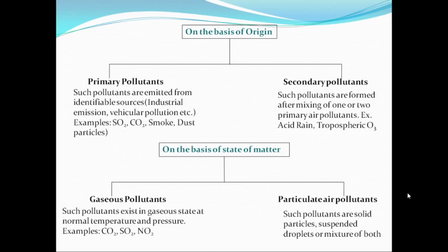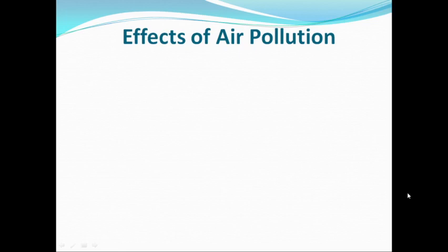Particulate air pollutants can also be mist, etc., or a mixture of both solid particles and suspended droplets of acids. So any kind of solid particle, be it natural or man-made, or any kind of suspended droplet of acids, or a mixture of these two, will be termed as particulate air pollutants. On the basis of state of matter, we can classify air pollutants as gaseous and particulate air pollutants. Now we'll talk about the effects of air pollution.